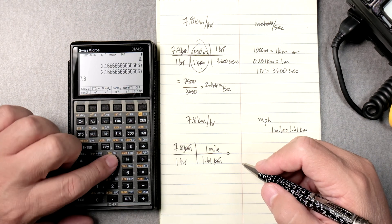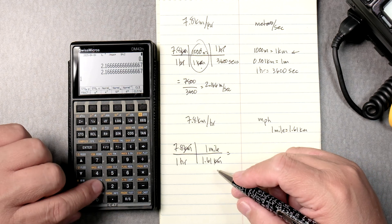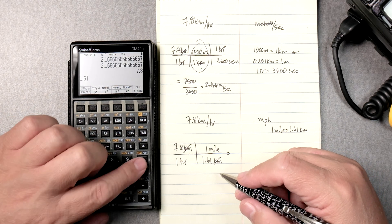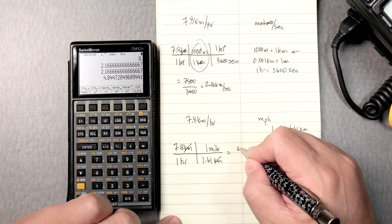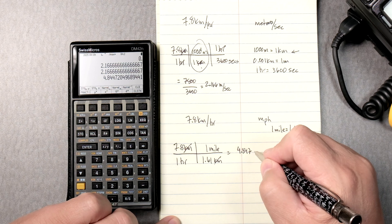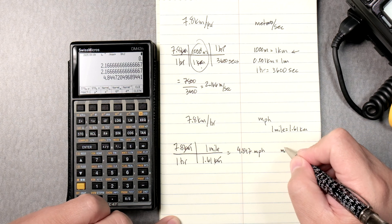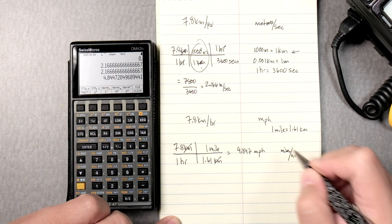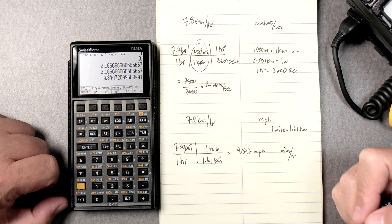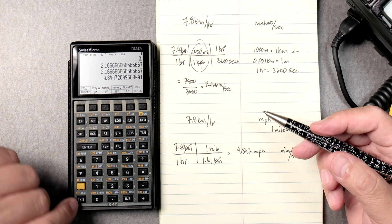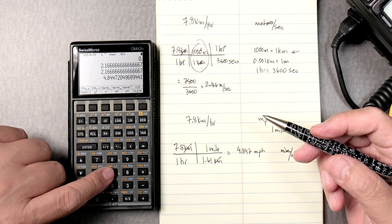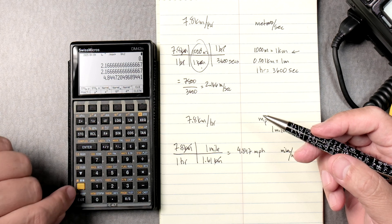So, 7.8 again. Enter. 1.61. Divide. That gives you 4.847 miles per hour. Either way. Now, the calculator, the C47, does have some conversions. Let's look at those.